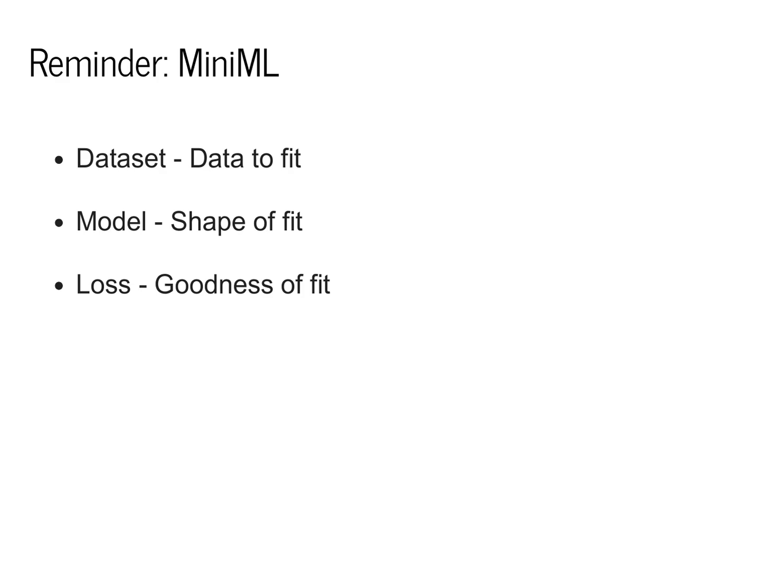Let's begin by reminding ourselves what we know about machine learning so far. We've introduced three concepts in this class. The first was the dataset, which was the underlying data we wanted to fit. Next was the model, which determined the shape of the fit. And finally, we talked about loss, which tells us how well we fit the underlying data.